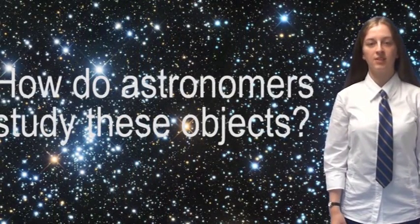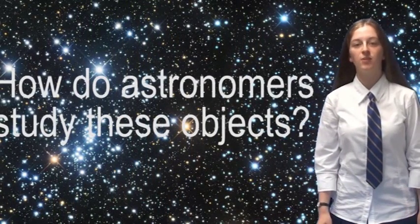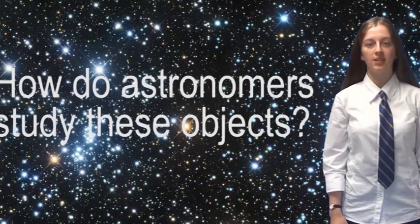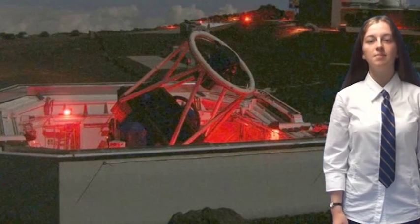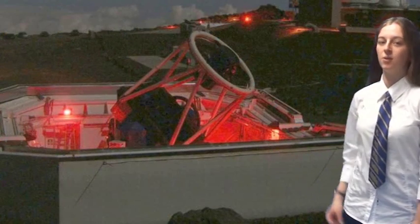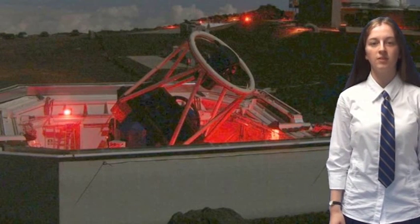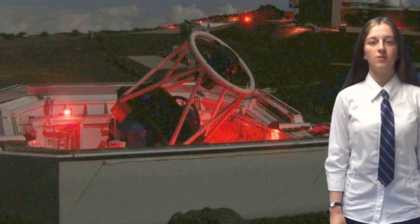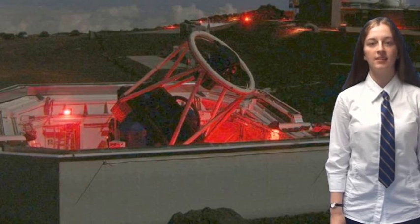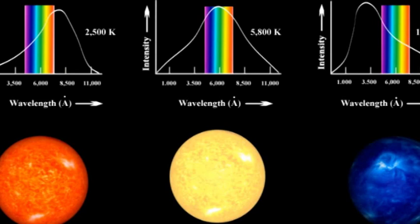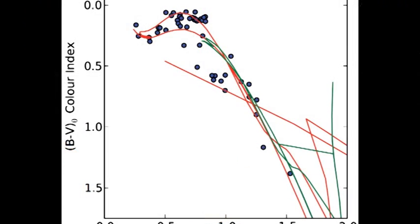So how do astronomers study these objects? It's not just a matter of looking through a telescope and making observations. Using a big telescope like this one in Hawaii, the Forks telescope north, they get a series of photographs through different filters and then measure the brightness of these stars in the different colors. This tells them about the temperature of the star.